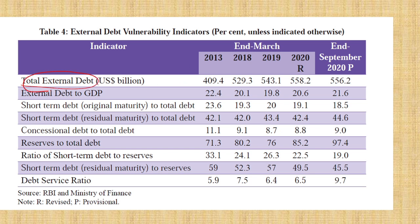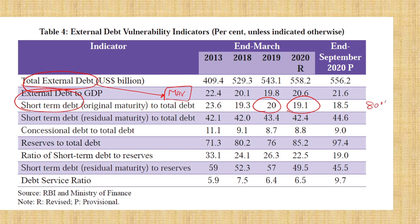Next, on total external debt — they will ask about its composition. In total external debt, maximum is NOT short-term debt. They may say maximum external debt of India is in short-term, but it is only 20%. The maximum is 80%, which is long-term debt. Short-term debt is very dangerous because if repayment is demanded immediately, we may not be able to pay. Long-term debt is more manageable.